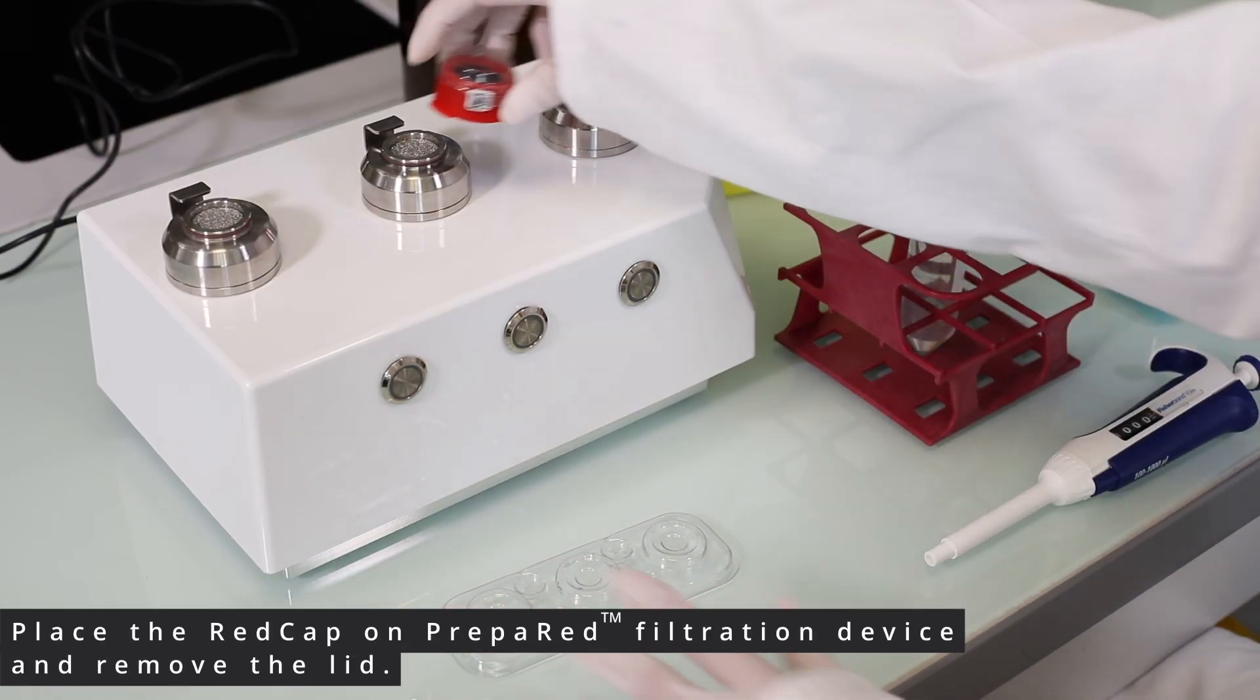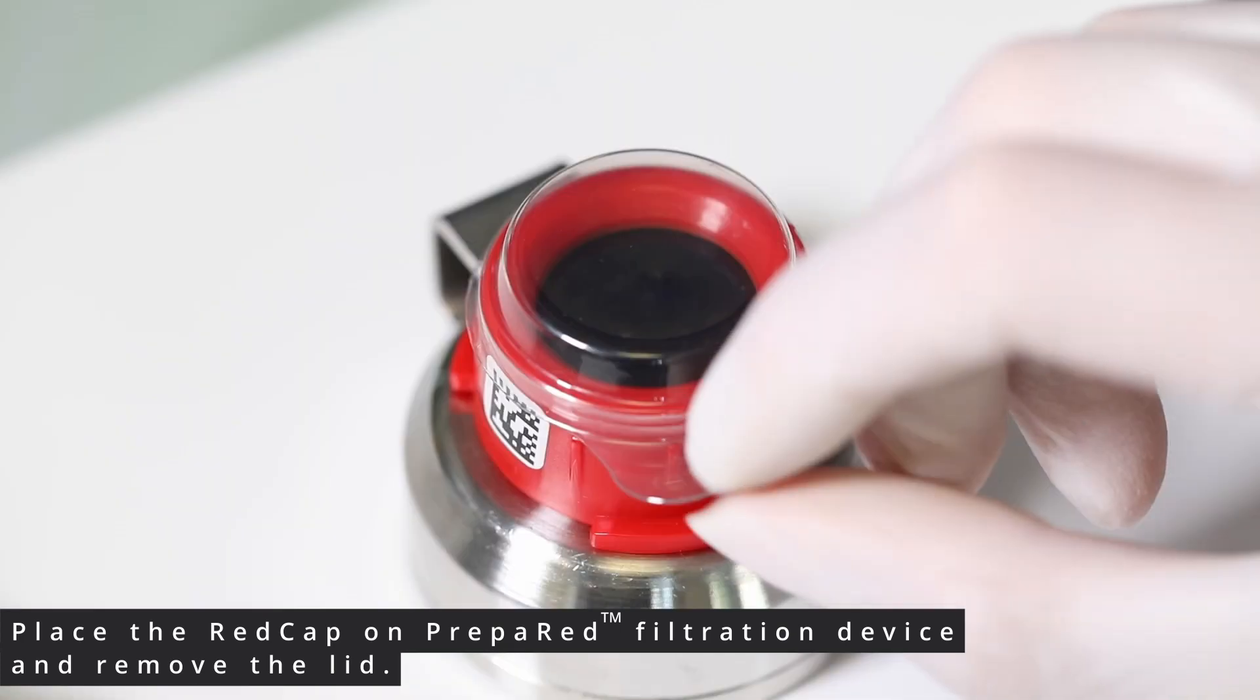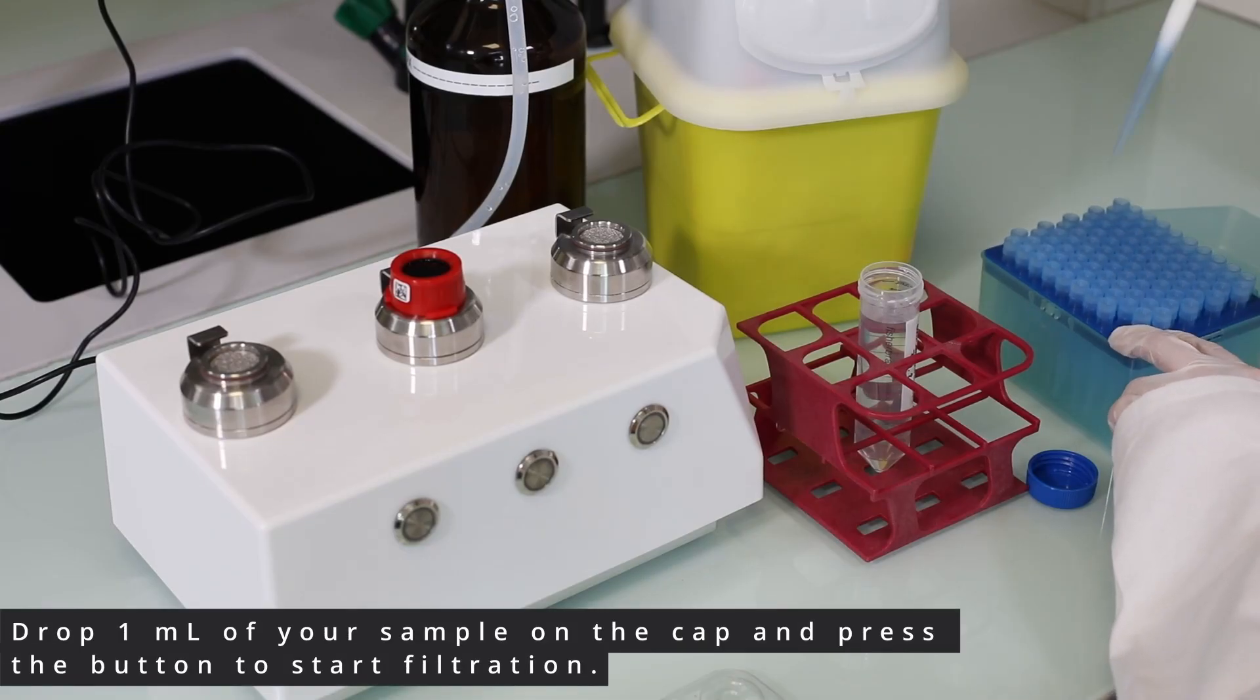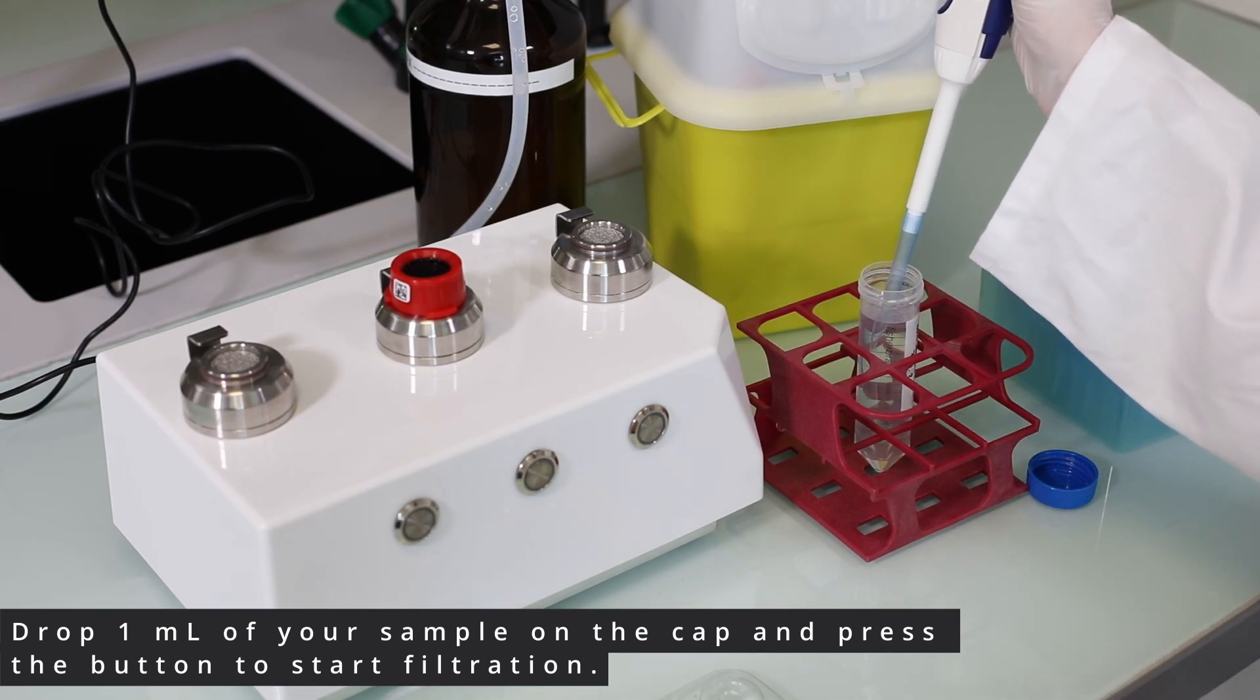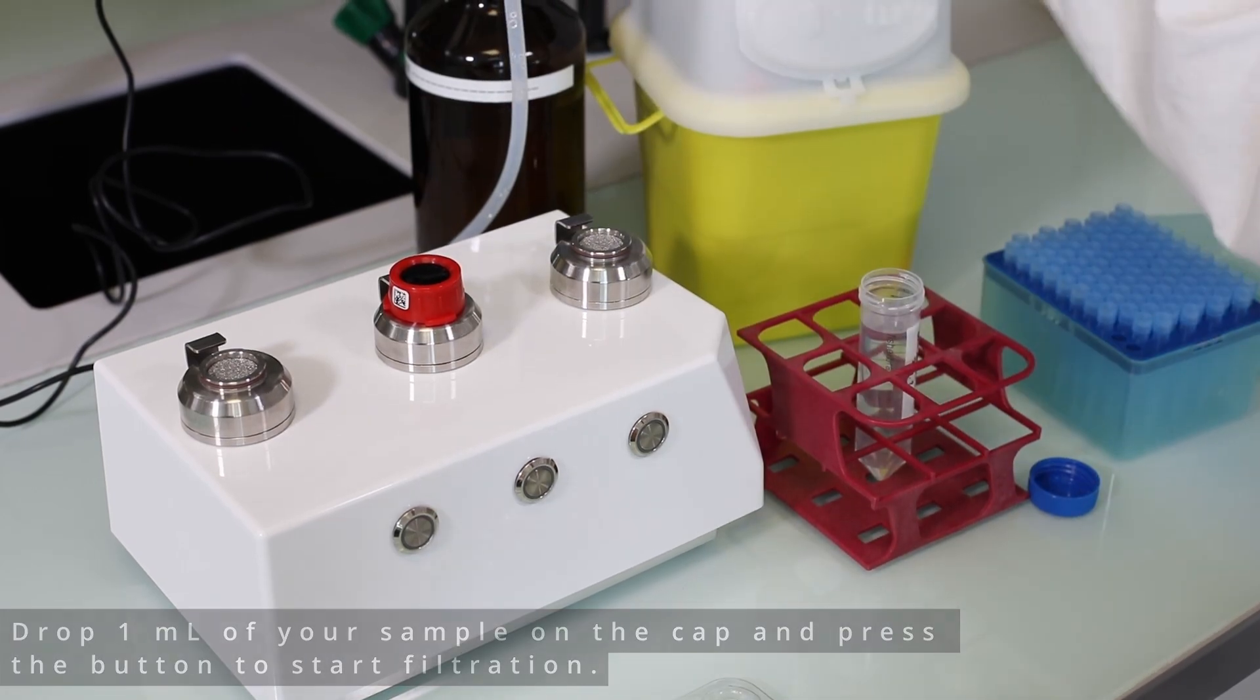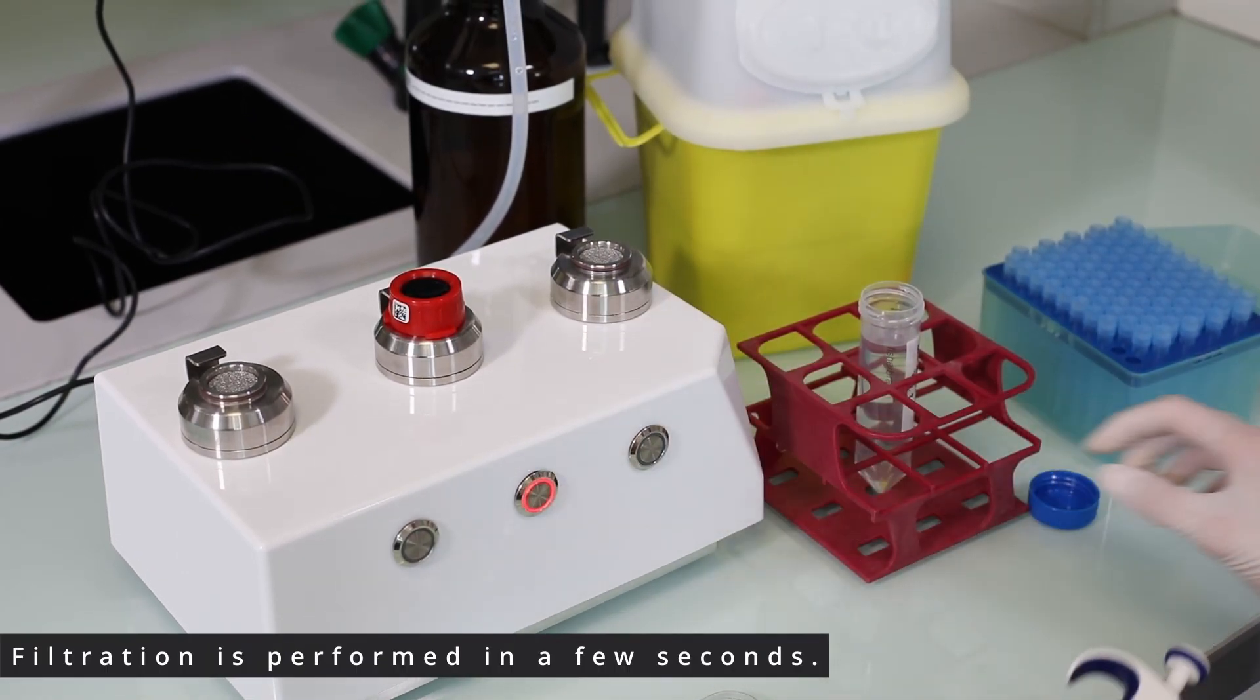Place the red cap on the Prepa Red filtration device and remove the lid. Drop one milliliter of your sample on the cap and press the button to start filtration. Filtration is performed in a few seconds.